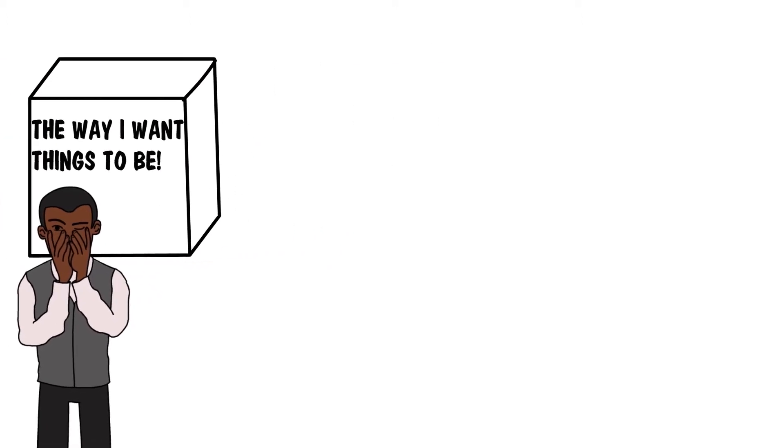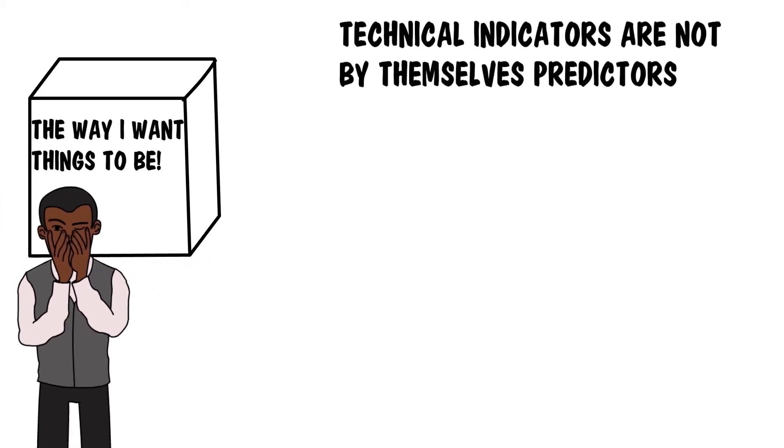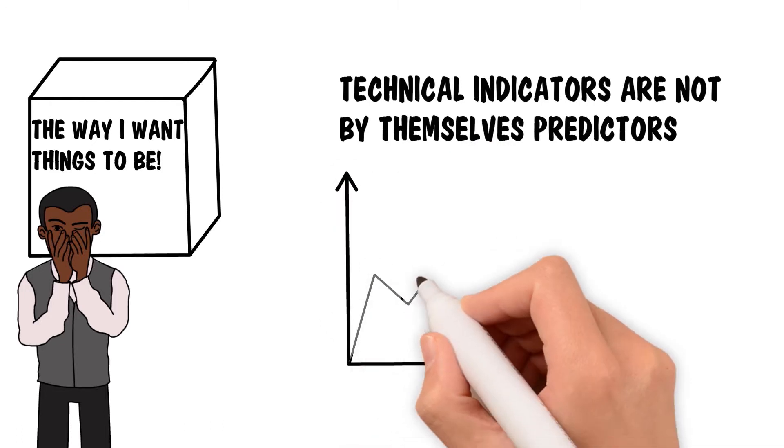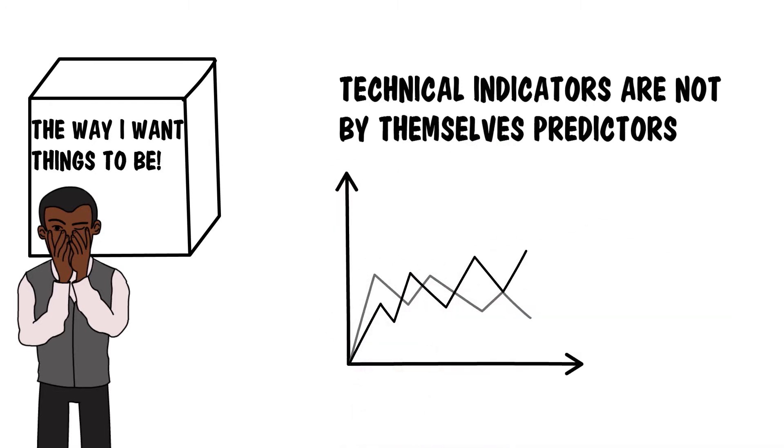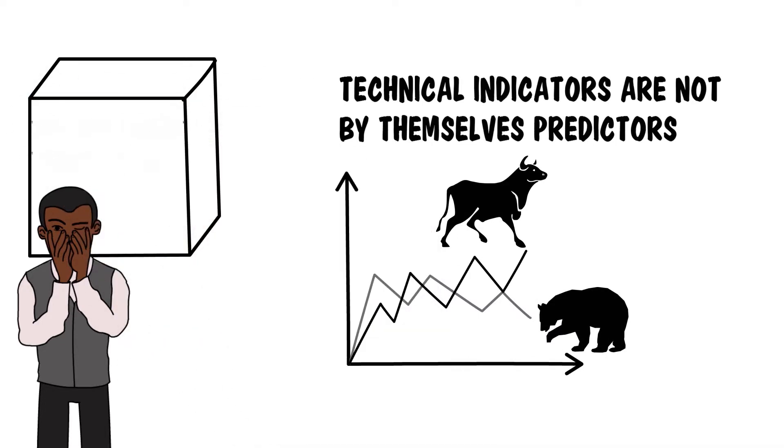Furthermore, this implies a very important thing: technical indicators are not by themselves predictors of the market movements. They just carry pieces of information on the current state of bulls and bears, and we are the ones making the predictions.